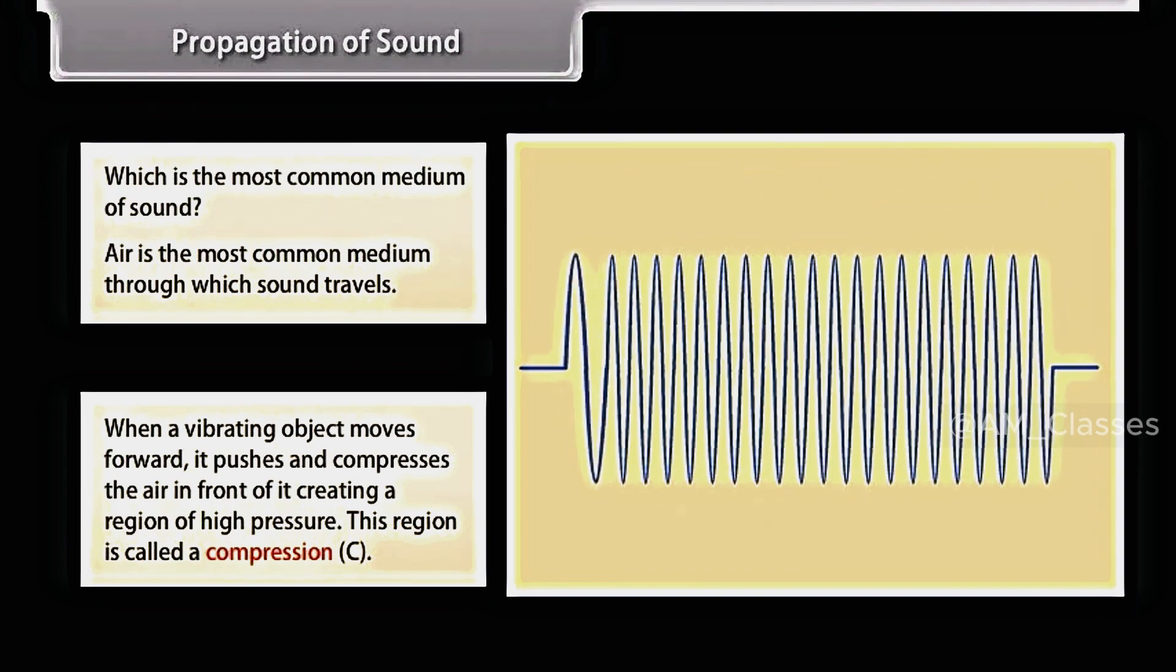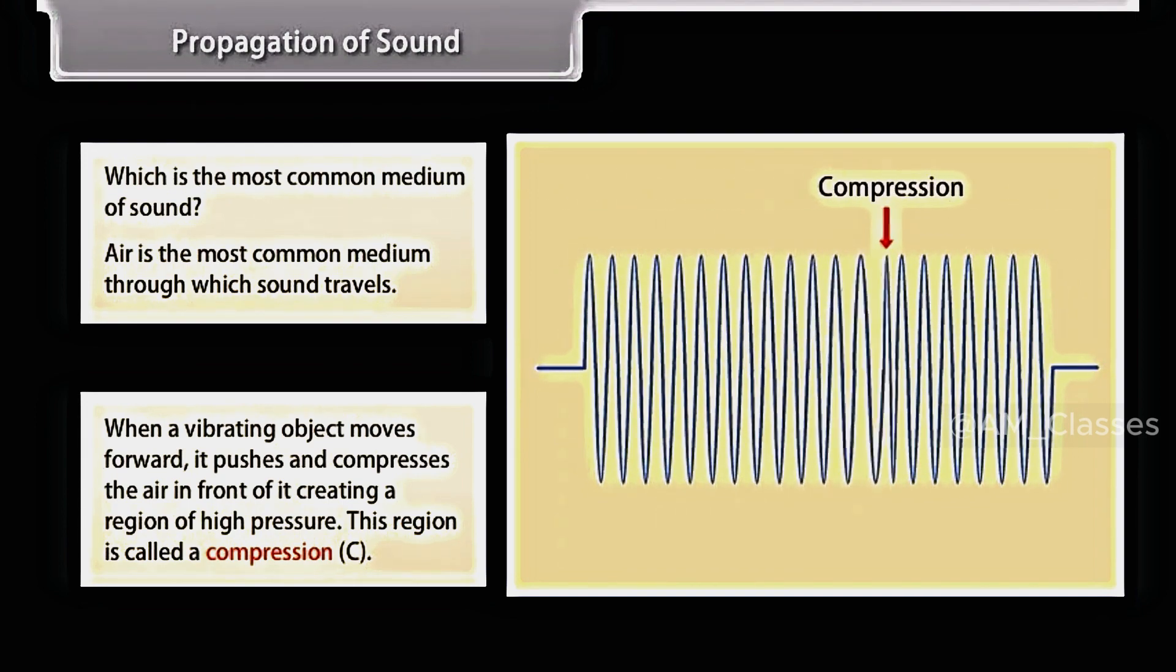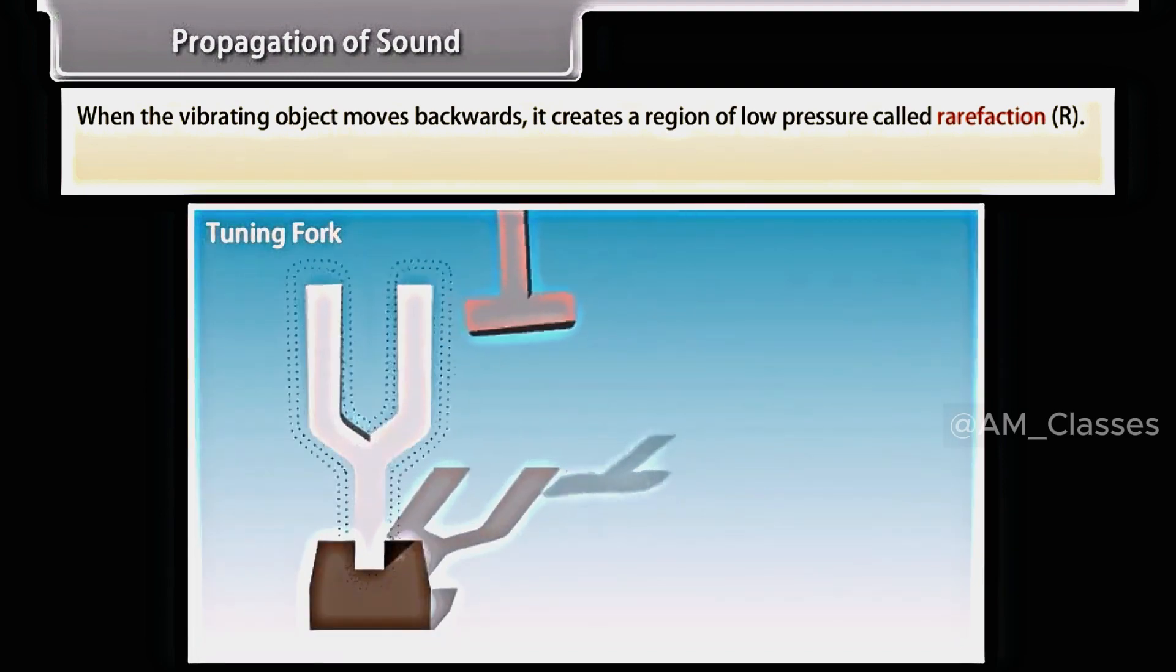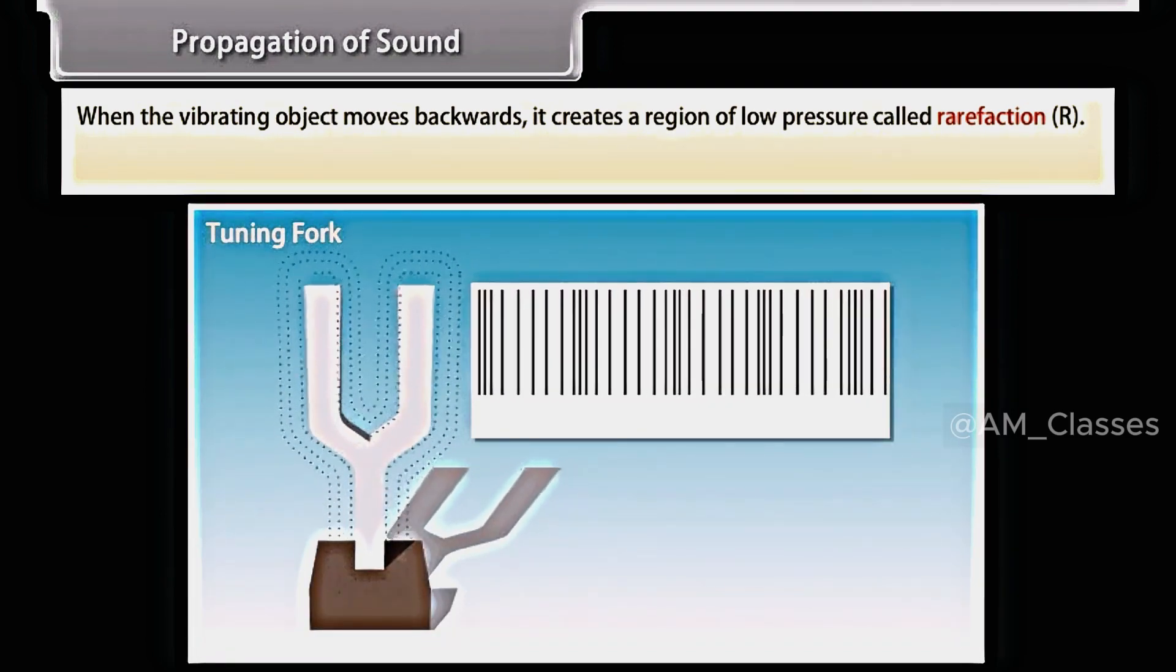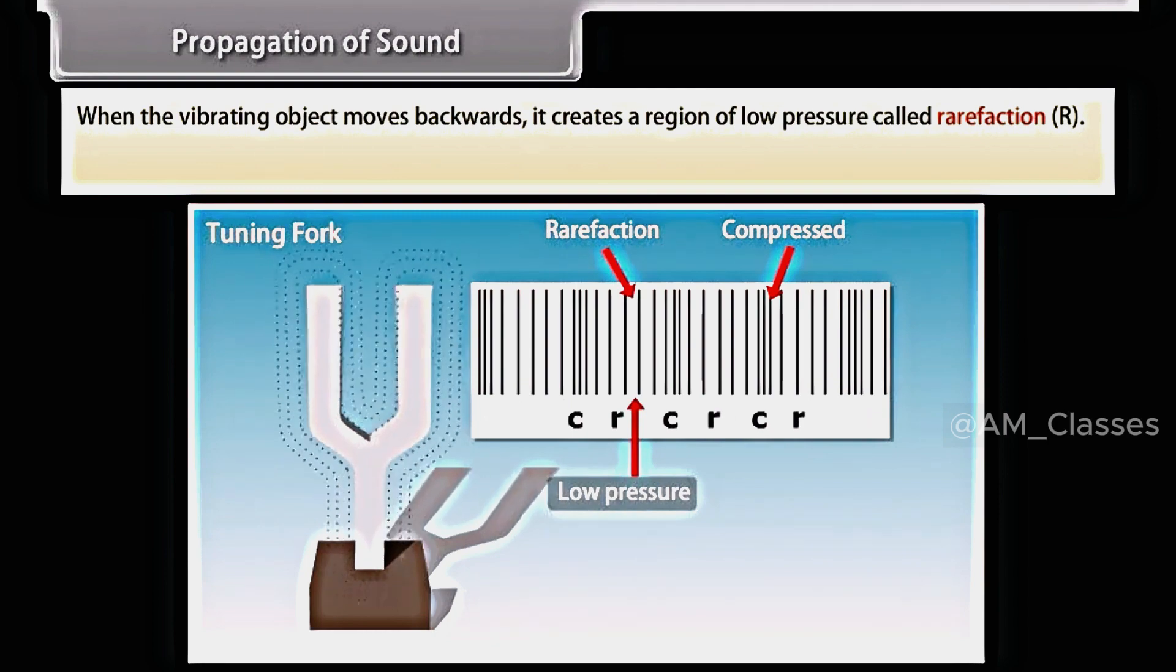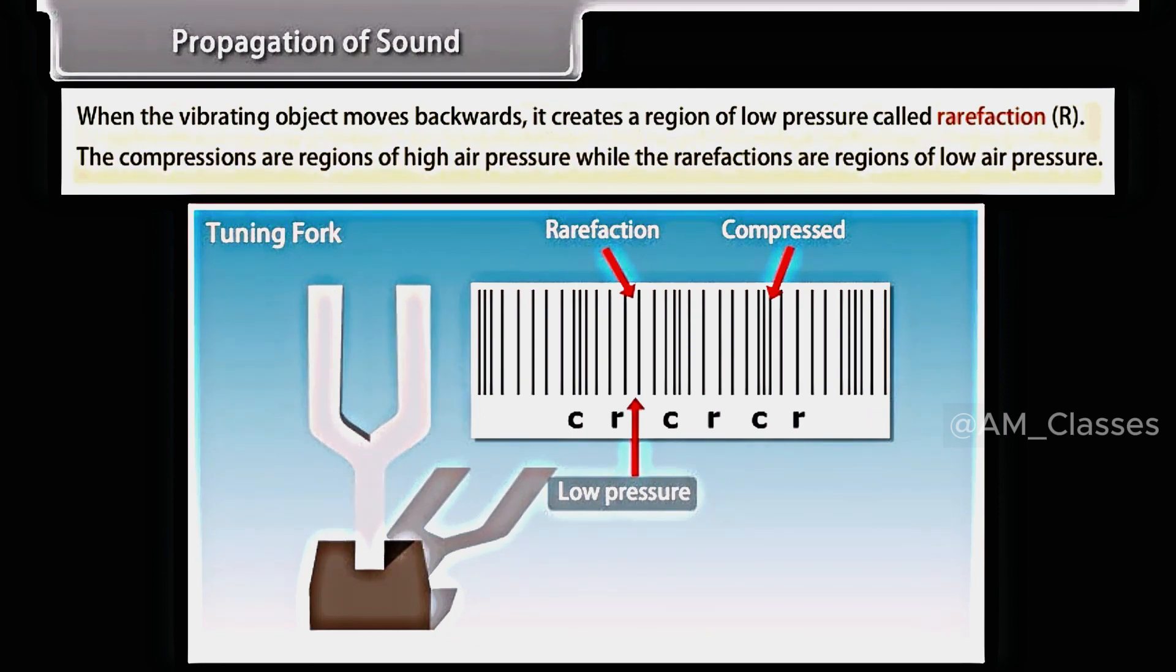This region is called a compression. And when the vibrating object moves backwards, it creates a region of low pressure called rarefaction. The compressions are regions of high air pressure, while the rarefactions are regions of low air pressure. Look at this image. It shows a sound wave created by a tuning fork and propagated through the air in an open tube. These are the regions of compression and these are the regions of rarefaction.